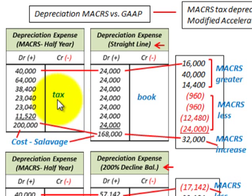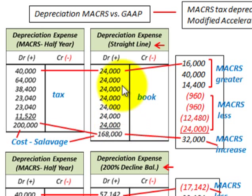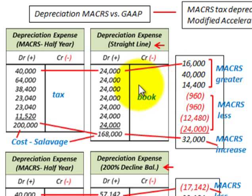For tax purposes using MACRS, we depreciate the total equipment cost of $200,000 down to zero. For GAAP book purposes, we only depreciate the cost less salvage value, which is $168,000. Comparing book versus tax, we have a greater amount of MACRS depreciation in the first years — years 1, 2, and 3 — by $16,000, $40,000, and $14,400 respectively.